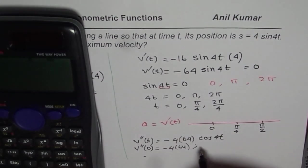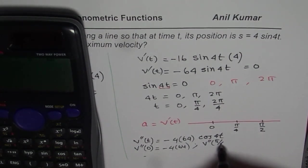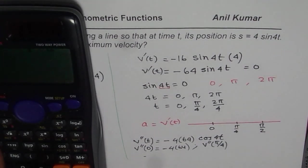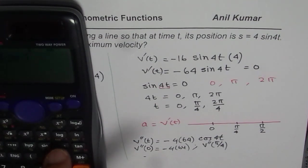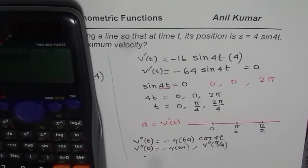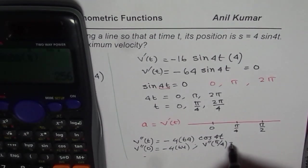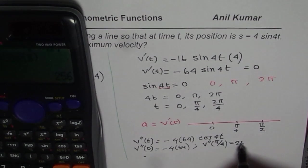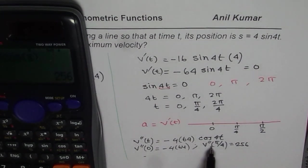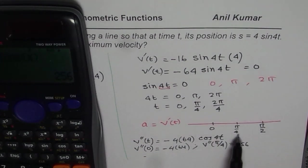For pi by 4, what is the value? It is negative 4 times 64 times cos of, within brackets, 4 times pi by 4, which is just pi. So we get a positive value. So this value is 256, which is positive. So at the second critical point pi by 4, we get positive value.